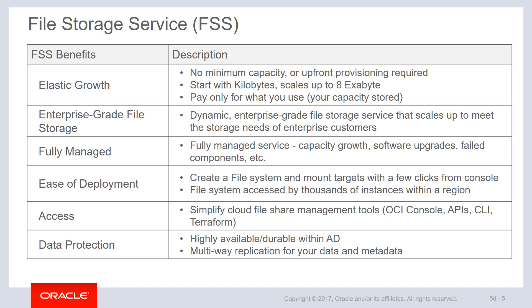It's really easy to deploy — simply create a file system and mount target within a couple of clicks, and then the mount target can be accessed by instances within the region, instances in other regions, or potentially even instances in a customer's on-premises location. Access to FSS is pretty straightforward. We can create the file system via the OCI management console, using API calls, the OCI command line interface, or even using Terraform to automatically generate both the file system and the mount targets. From a data protection perspective, this is a highly available, highly durable construct within a single availability domain. All data stored on FSS is automatically replicated across multiple storage devices to ensure that component failures will not affect the customer's data durability.